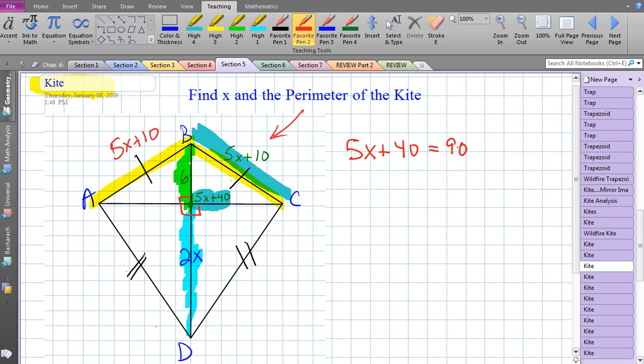That's going to be the ticket to solve for x. Let's solve: we have 5x equals 50, and x turns out to be 10. So it looks like we're done with part 1, we found x.